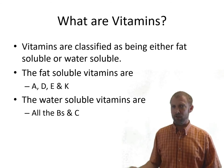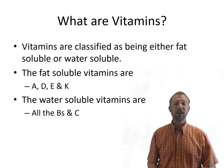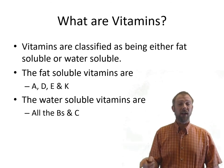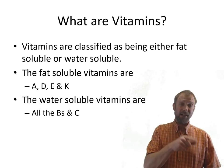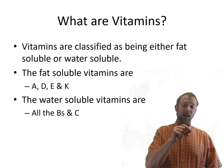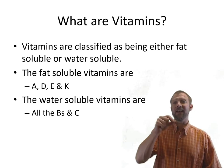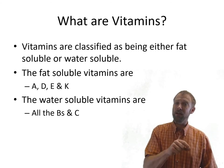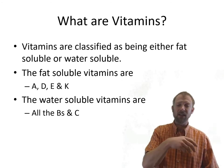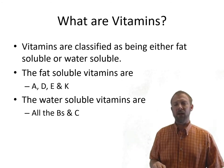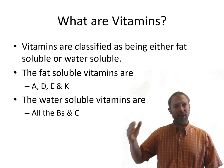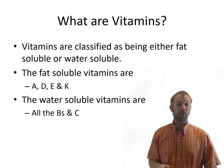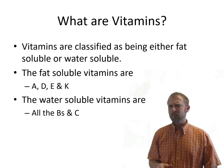Water-soluble vitamins, if consumed in excess, will simply be urinated out — it's just expensive urine if you feed too many B vitamins or C. For vitamin A specifically, we usually feed beta-carotene instead, which the body converts to vitamin A. Beta-carotene is not toxic — if you over-supplement it, the body will only convert as much to vitamin A as it needs.